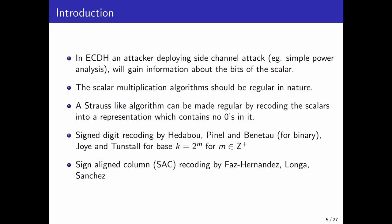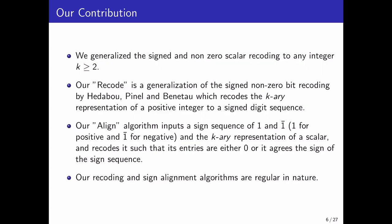There are signed digit recoding for both binary and k equals 2 to the power m base, while sign-aligned column recoding is done for binary case. Talking about our contribution, we generalized the signed non-zero-bit scalar recoding algorithm to any positive integer base. We give two algorithms, Recode and Align. Recode can serve as the generalization of the signed non-zero-bit recoding. It can recode the k-ary representation of a scalar to a signed non-zero sequence. While our Align algorithm can take a sequence of 1 and negative 1 and the k-ary representation of a scalar as its input and recodes it in such a way that the entries of the new sequence either equals 0 or agrees the sign of the signed sequence.